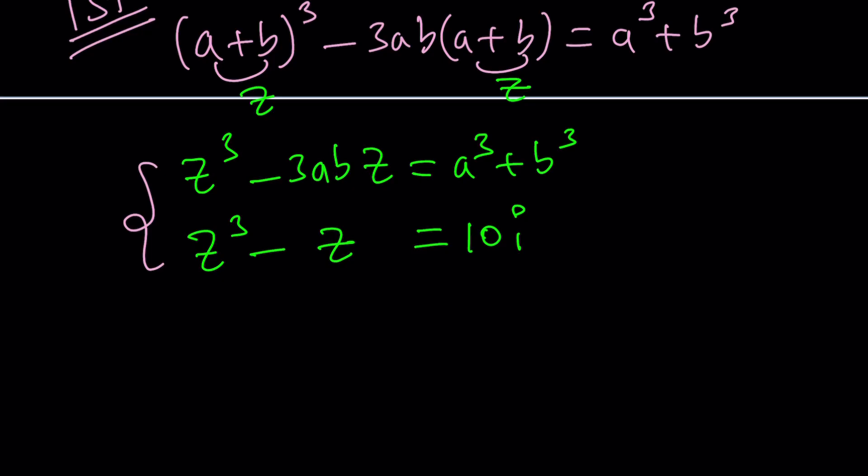So here's how it goes. The coefficient of z here is -3ab, but here is -1. So -3ab is supposed to equal -1, which implies that ab must equal 1/3. And the constant term, a³ + b³, is equal to 10i.